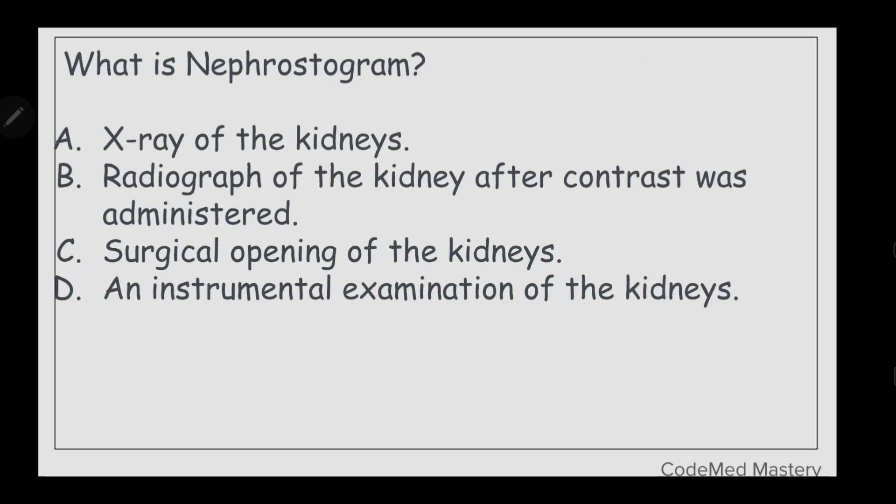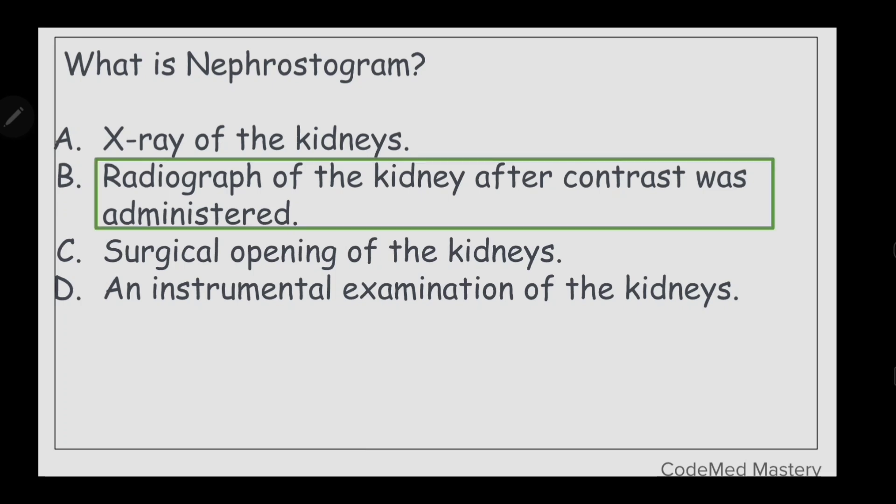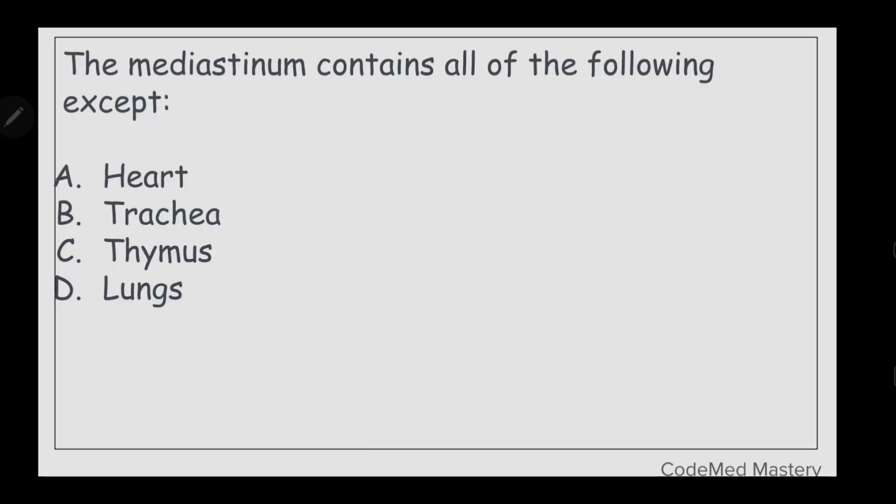Next question: what is a nephrostogram? Option A: x-ray of the kidneys, option B: radiograph of kidney after contrast was administered, option C: surgical opening of the kidneys, option D: an instrumental examination of the kidneys. The right answer is option B, radiograph of the kidney after contrast was administered.